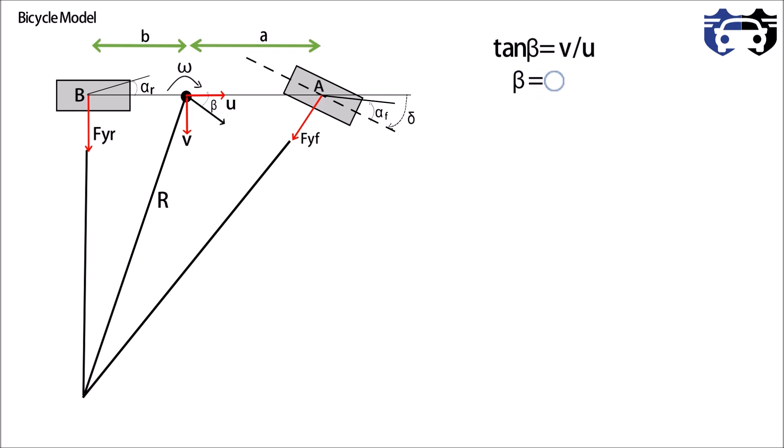From the figure we can write tan(beta) equals to v by u. As beta is very small we can write beta is approximately equals to v by u. This is our equation one.